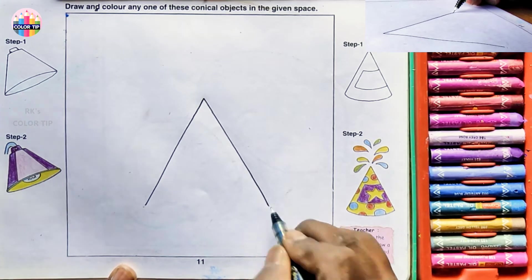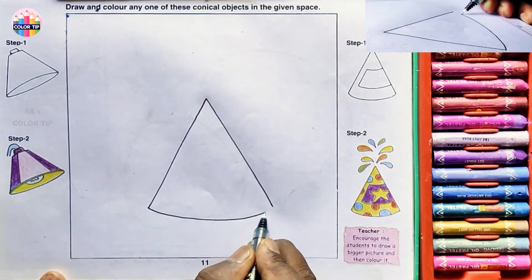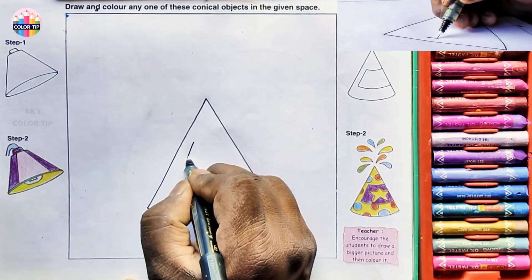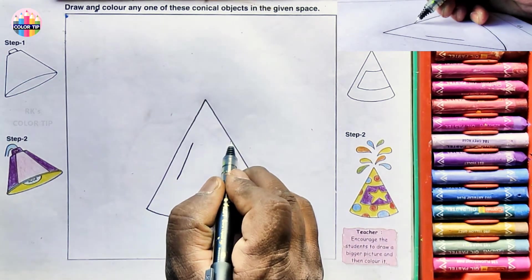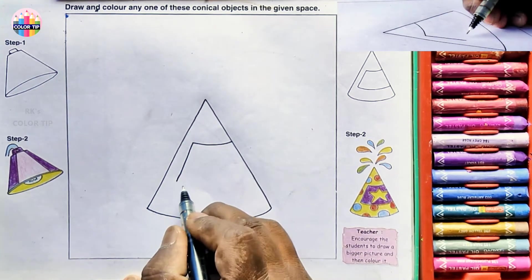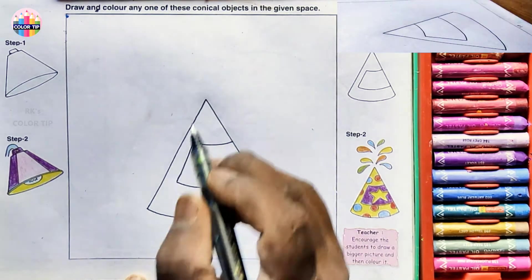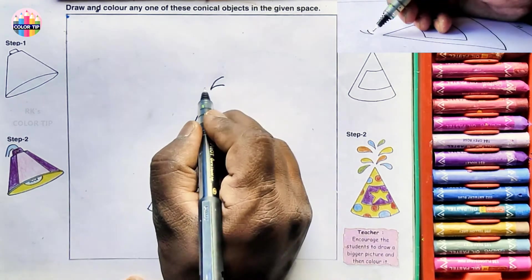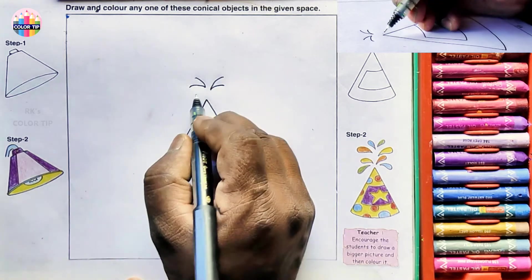Join both the lines with a curve parallel to this line. Here in the middle, draw one more line. Now from here to here, draw a curve. Even at the bottom, draw a curve. The technique to get this easily is like a V-shape but a curved one.